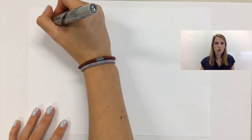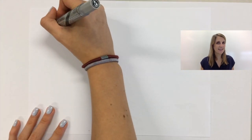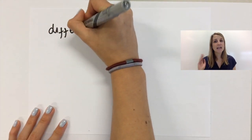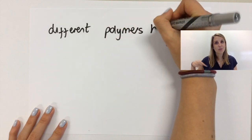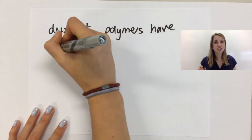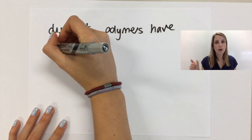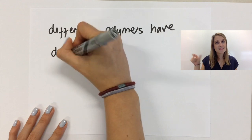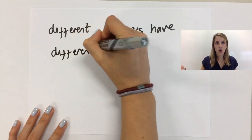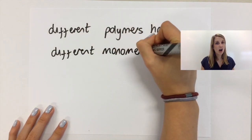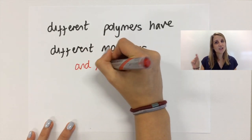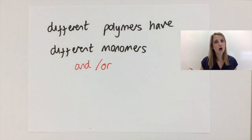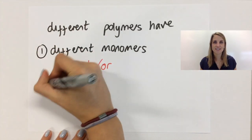You might be thinking: why aren't all polymers identical to each other? There are a couple of things that we can change. The first is the monomer itself — that repeating building block can change in its number of carbons, and you can add different bonds in. If you change that building block, then the whole polymer changes.